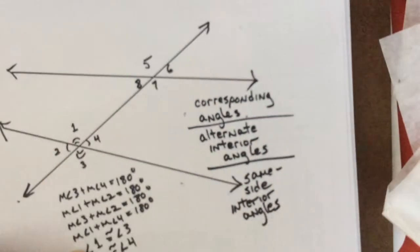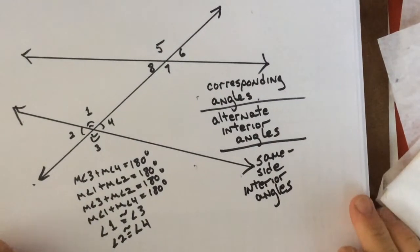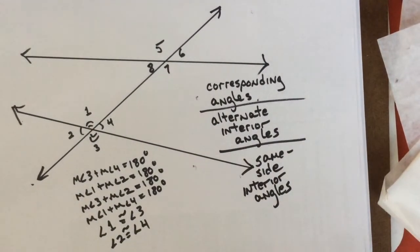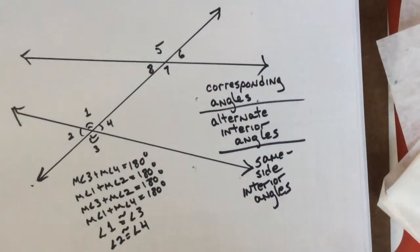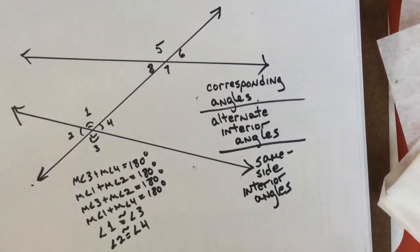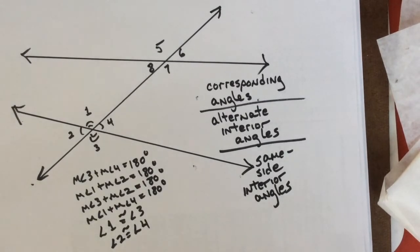Okay, so let me ask you to use your powers of deduction here. Which ones do you think are corresponding angles? Remember, we're talking about relationships between this group here and this group here. Seven and three.